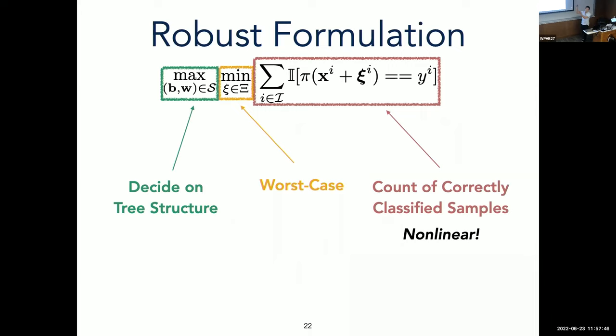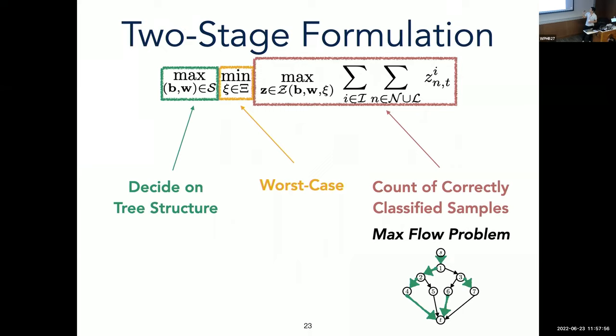So now going back to this problem that I've been referring to this whole time, let's take this problem. And now we introduce this maximum flow graph. And so we can turn this problem into a maximum flow problem. And so this maximum flow problem will count the number of correctly classified samples for us. So the advantage of this formulation, as opposed to the previous one, is that we now have a linear objective and constraints. However, you can see that we have now this maximization problem that we have to deal with inside this minimization problem.